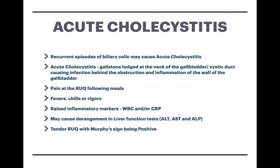Let's discuss acute cholecystitis, which is similar to biliary colic but with active inflammation and constant pain. Recurrent episodes of biliary colic may cause acute cholecystitis, in which the gallstone becomes lodged in the neck of the gallbladder or the cystic duct. This blockage causes infection behind it, inflaming the wall of the gallbladder. The patient presents with pain following meals in the right upper quadrant, and also constant right upper quadrant pain. They have fevers, chills, and rigors. Bloods show raised inflammatory markers including raised white blood cell count and CRP. There may also be derangement in liver function tests including alanine transferase, aspartate transferase, and alkaline phosphatase.